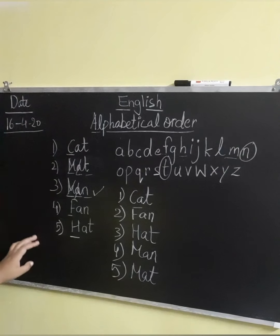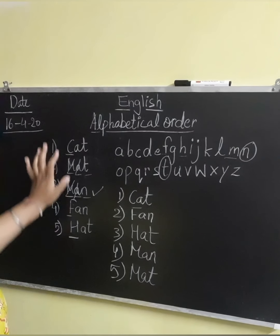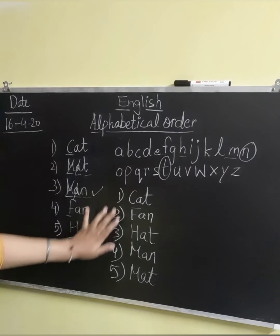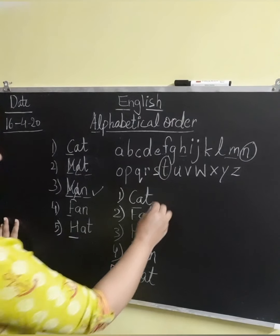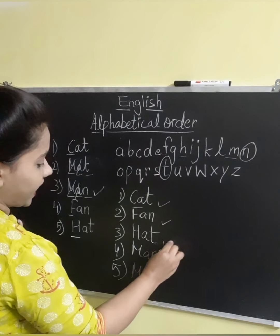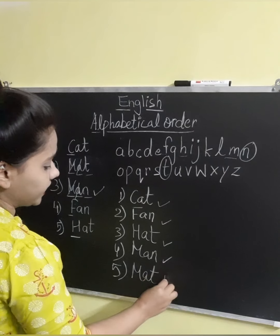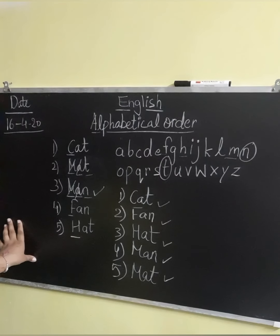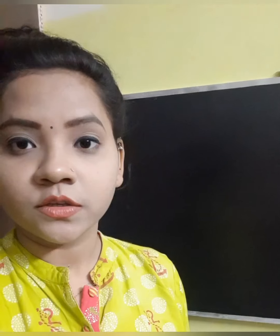So there we go, class. We are now able to arrange these five words in the alphabetical order: cat, fan, hat, man, and mat. So this is the correct alphabetical order of these five words. For your better understanding of alphabetical order, I am adding a video in this video. So let's together watch the video, and then we will move to the work we are supposed to do in our notebook. So let's watch the video now.